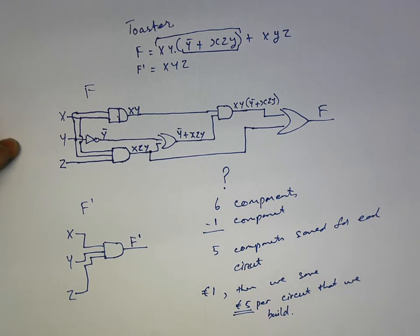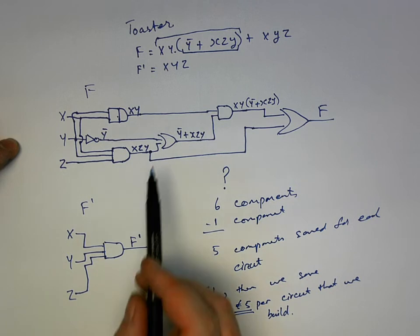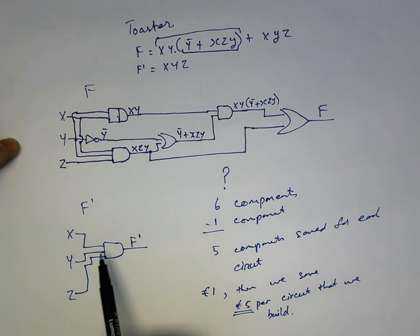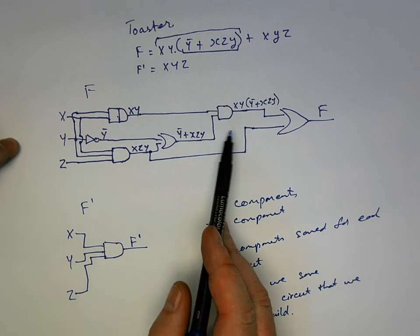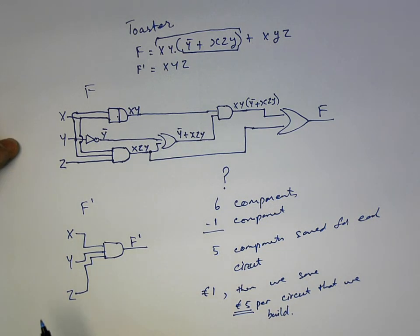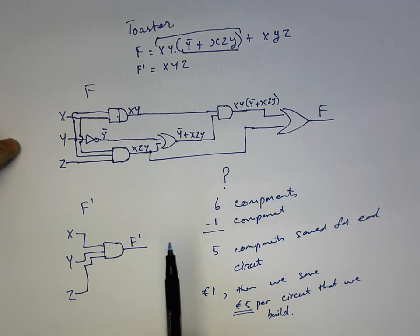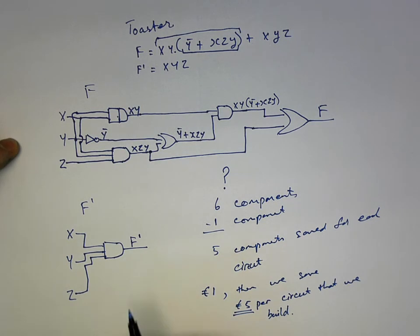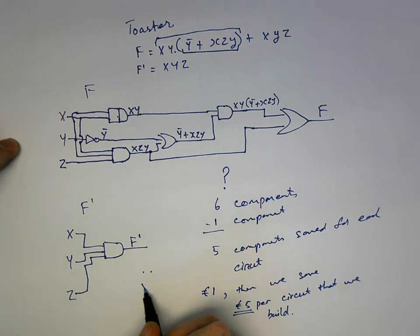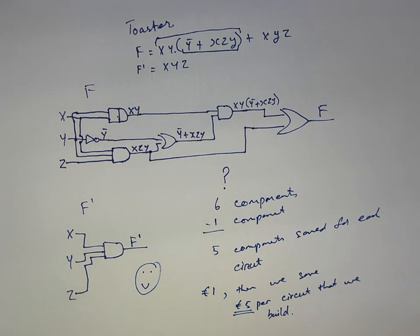So now we're all done. We've drawn our two circuits, we've figured out how many components we're going to save, and how that equates back down to money. If we look at one euro per digital circuit. So if we're all happy, we'll draw a little happy face, and we'll finish.